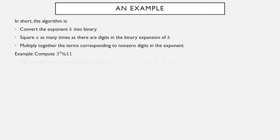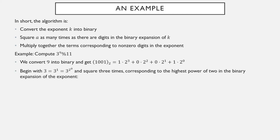For example, let's do 3 to the 9th mod 11. Our exponent is 9; we convert it into binary. It's one copy of 2 cubed, no 2 squareds, no 2 to the 1sts, and one 2 to the 0. We begin with our number a, which is 3. Now 3 is just 3 to the 1st, in other words 3 to the 2 to the 0. That corresponds to the 2 to the 0 term in the exponent. If I square it, I'll get my 2 to the 1st term. If I square that, I'll get my 2 squared term. If I square that, I'll get my 2 cubed term. So I have to square three times, corresponding to 3 being the largest power of 2 that appeared in this exponent.